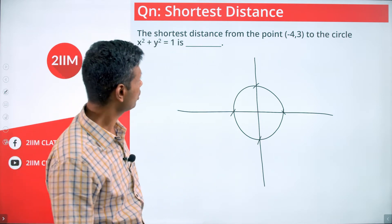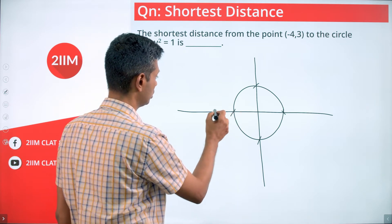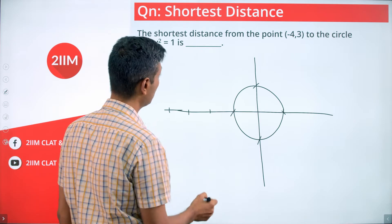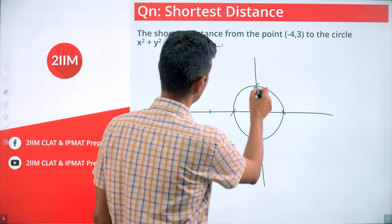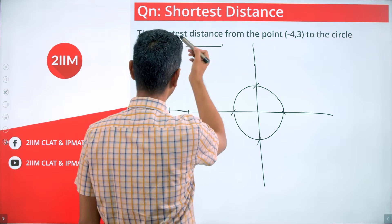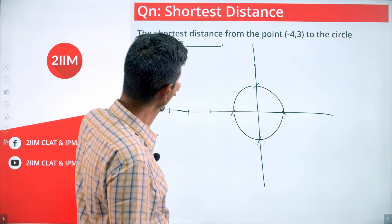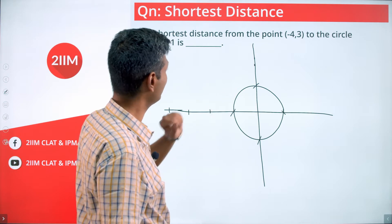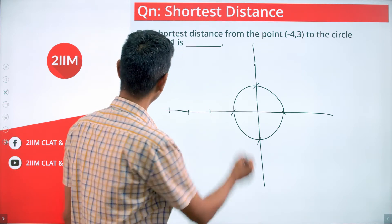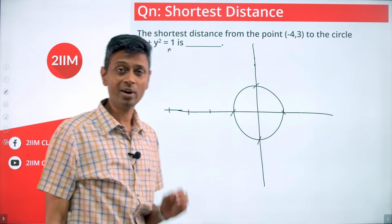I want to find the distance from the point (-4, 3). So somewhere here I am roughly marking the point. The shortest distance from the point (-4, 3) to the circle — you want to draw the shortest distance to this. You can draw some line cutting through as a secant, or you can draw a line just touching it, which is a tangent.